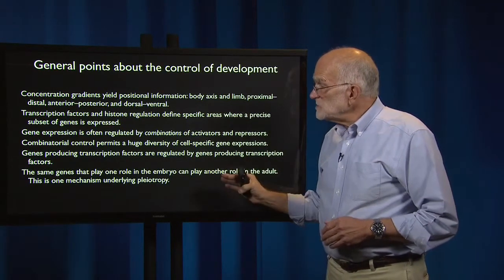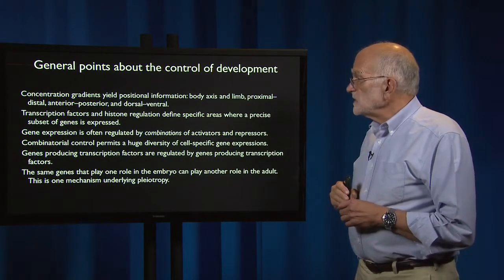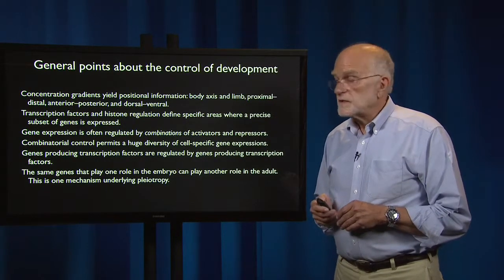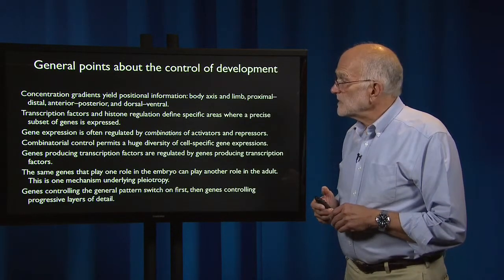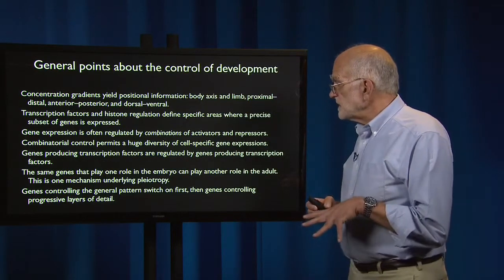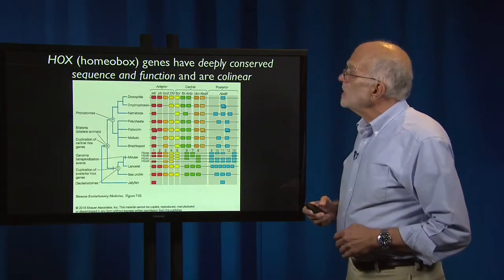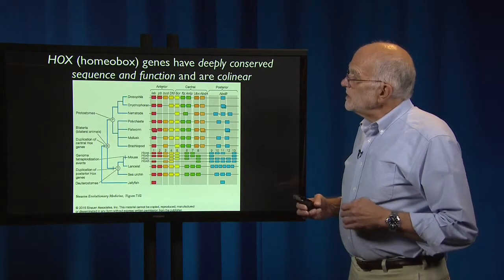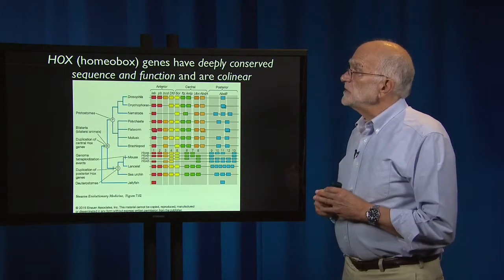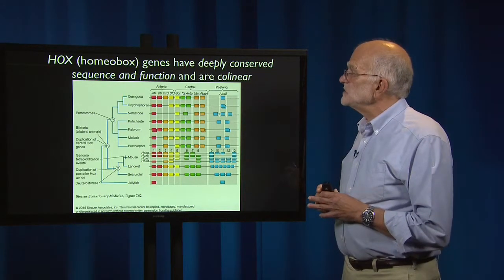Genes that produce transcription factors are regulated by genes that produce transcription factors, so there is a hierarchy of transcriptional control. The same genes that play one role in the embryo can play another role in the adult — this is one of the mechanisms that underlies pleiotropy. Genes that control the general pattern switch on first, and then genes controlling progressive layers of detail. One of the important sets of developmental control genes are called the Hox, or homeobox, genes.